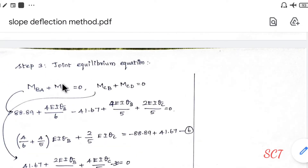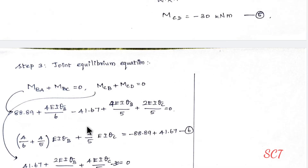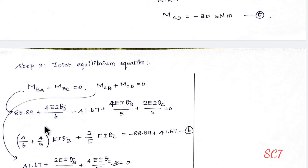At joint B: M_BA + M_BC = 0. At joint C: M_CB + M_CD = 0. Substituting equations 2 and 3 into the joint B condition, and substituting with the fixed end moment values, we get equation number 5 involving EI·θ_B and EI·θ_C. For joint C, substituting gives (2/5)EI·θ_C, which is equation number 6.